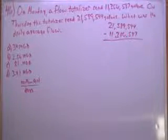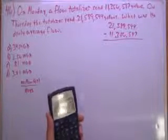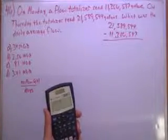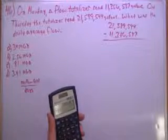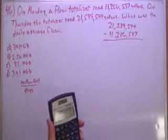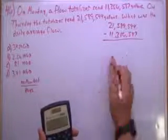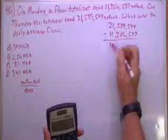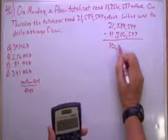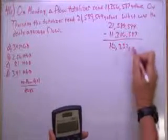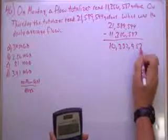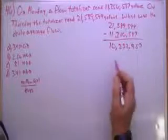We'll just use the calculator. So 21,589,544 minus 11,356,587 is going to give me 10,232,957. So how many million gallons is it?